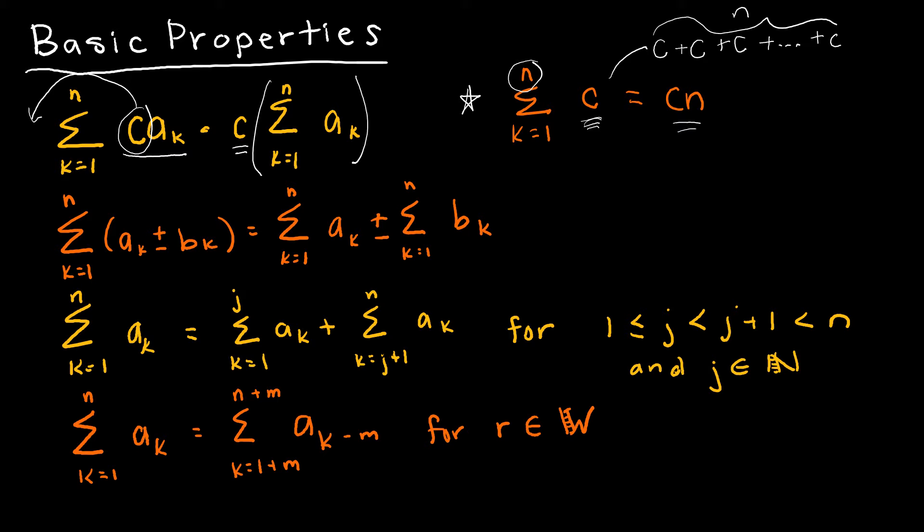If I have two different summations, using the same limits of the summation, it's okay for me to break those up. For instance, say I have the summation as k goes from 1 to n of 2k plus 3. I can break this down into the summation as k goes from 1 to n of 2k, which of course I could use that property and put the two on the outside, and say 2 times the summation of k. And then I could add to that the summation as k goes from 1 to n of 3, where I would obviously be using this property.